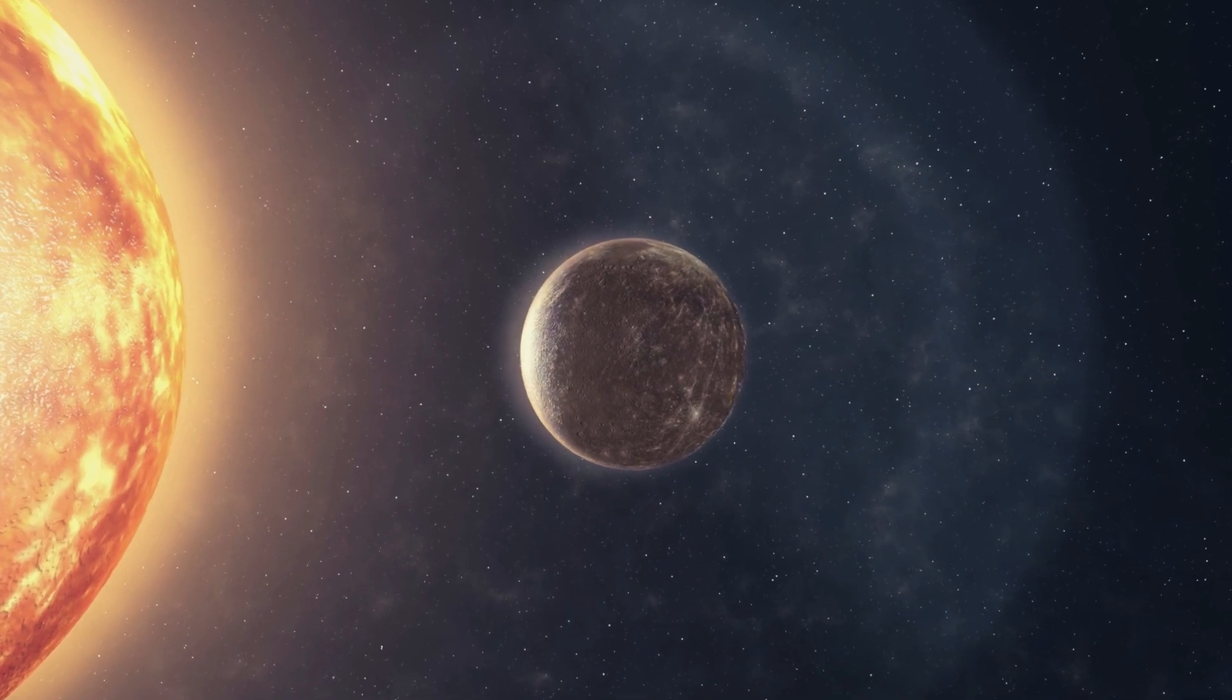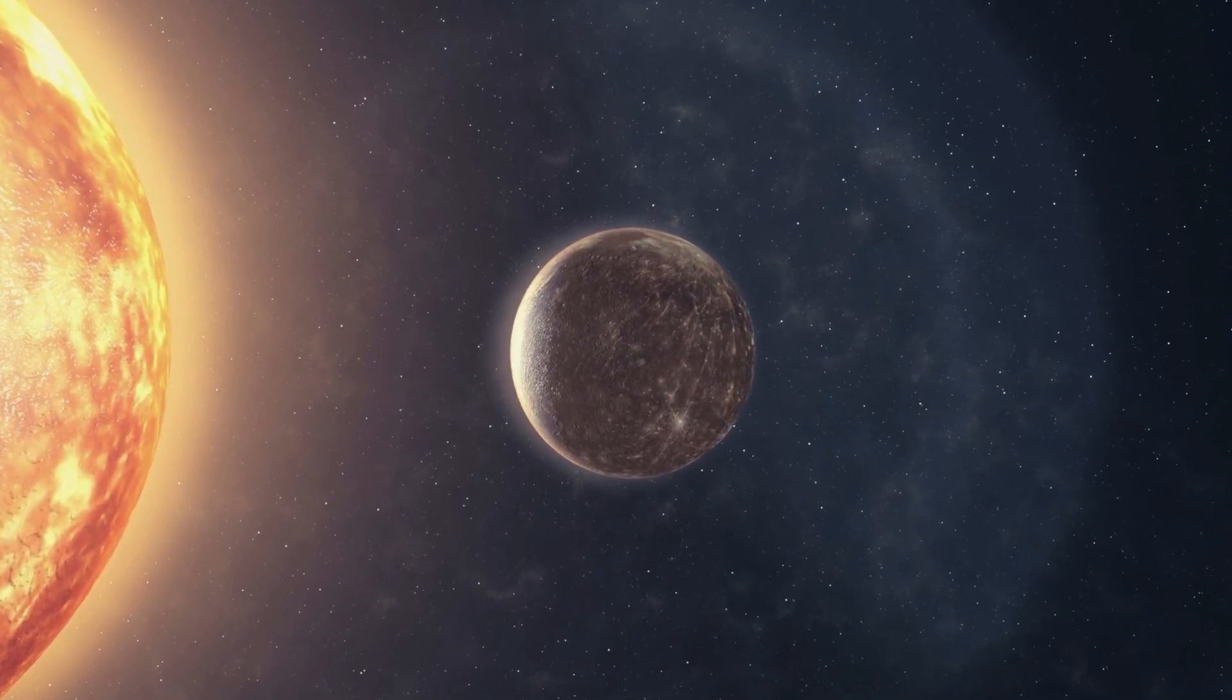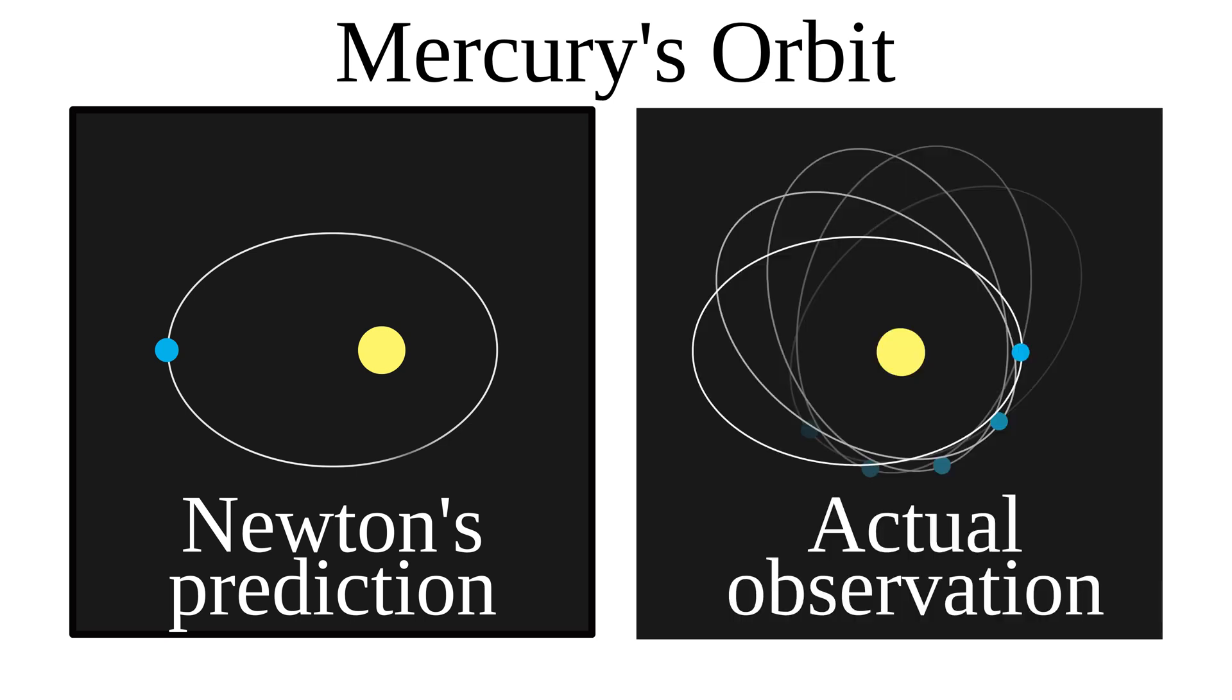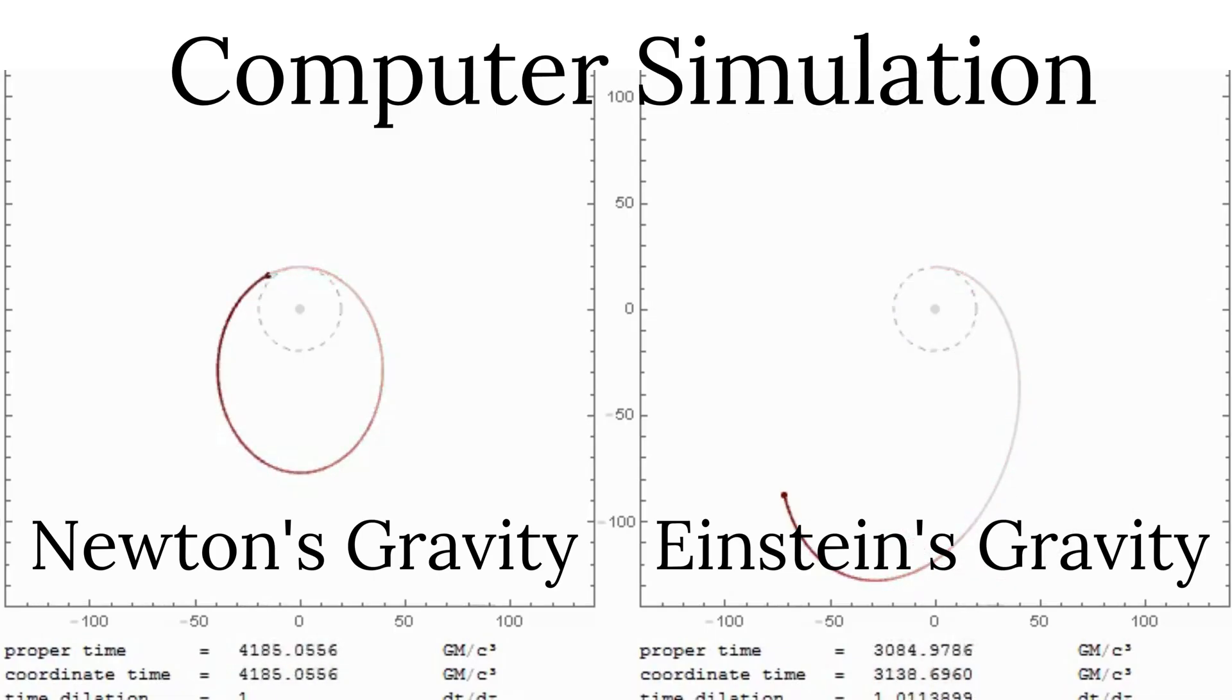Mercury's orbit. Newton's law predicted the Mercury's orbit to be like this. But the observations kept on suggesting this. The perspective of a force could not account for the anomaly. But Einstein's equations with a new understanding of curvature resolved this problem and the predictions of Einstein's theories were spot on.